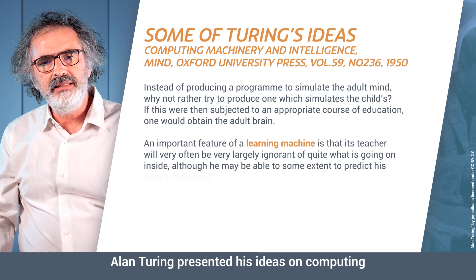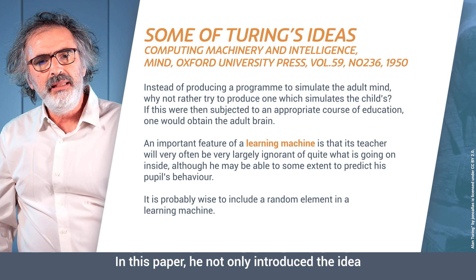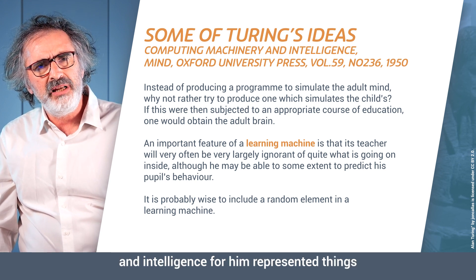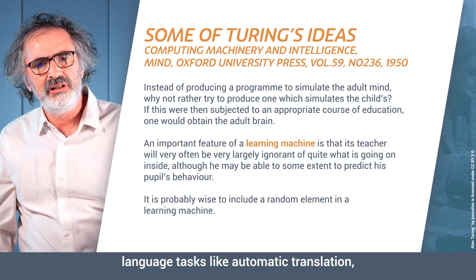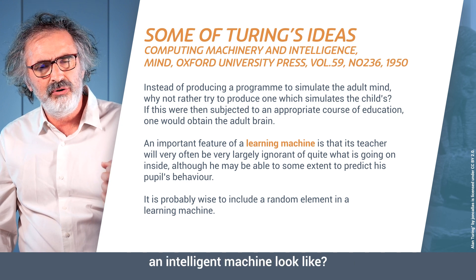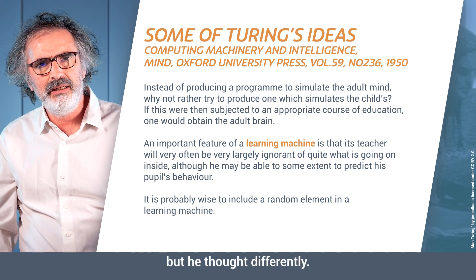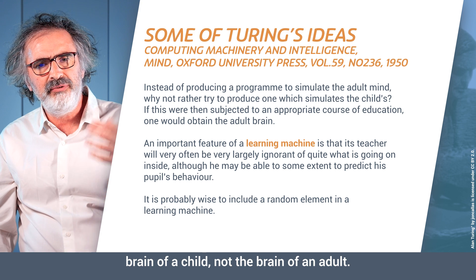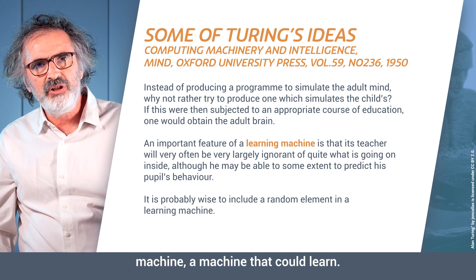In an important later paper, Alan Turing presented his ideas on computing machinery, intelligent machines, and intelligence. He introduced the idea that a machine could be intelligent — and intelligence for him represented things like being good at chess or performing language tasks like automatic translation. He also asked: what would an intelligent machine look like? Rather than programming all the intelligence in, he thought we should enter the brain of a child, not an adult. What distinguishes a child is the capacity to learn — so he invented the notion of a learning machine.